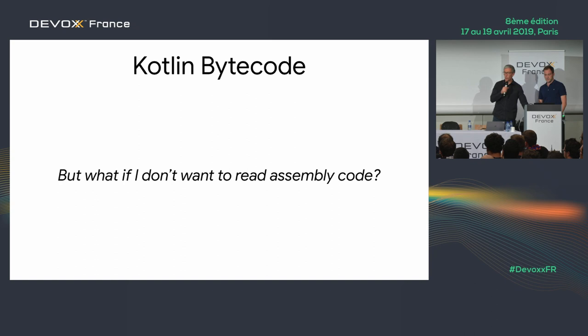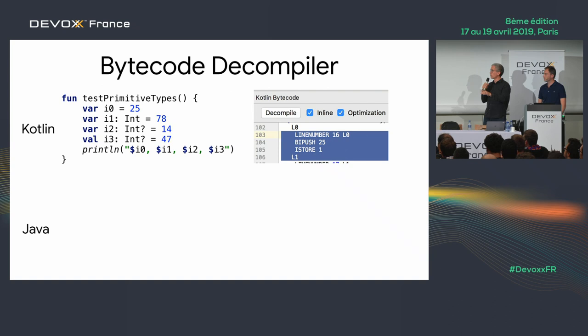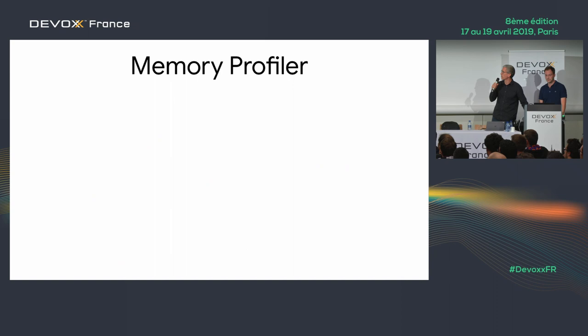If bytecode is too much, you can look at the equivalent Java code. There's a decompile button at the top of the bytecode tool. Decompilation gives you Java code that looks pretty similar to the Kotlin code in simple examples, and you can see exactly what's going on. For the nullability parameter, it automatically gets extended to the Java type Integer.